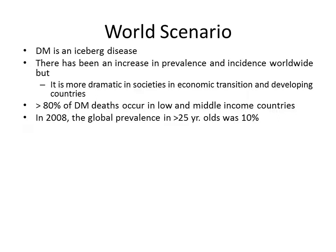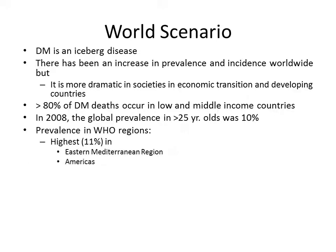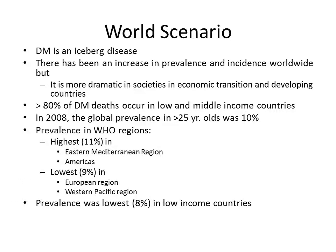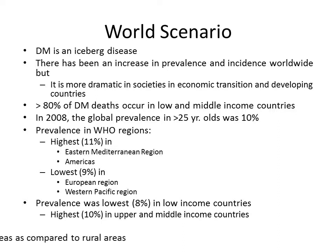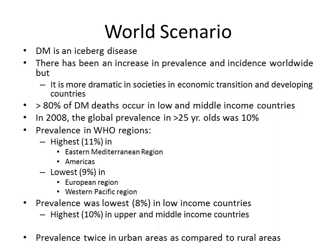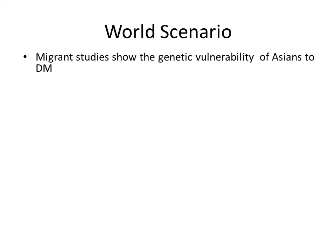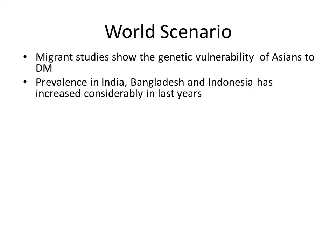The prevalence was 10% among those 25 years and above in 2008. In WHO regions, the highest prevalence is in the eastern Mediterranean region and the Americas, while the lowest was found in the European and Western Pacific regions. Prevalence was lower in low-income countries and higher in upper- and middle-income countries, and twice as high in urban compared to rural areas. Migrant studies show Asians have a genetic vulnerability to develop diabetes, and prevalence in India, Bangladesh and Indonesia has increased considerably.